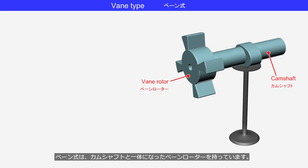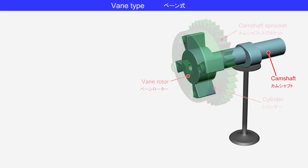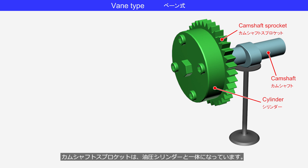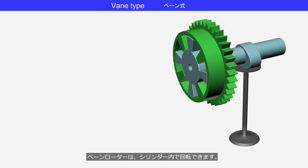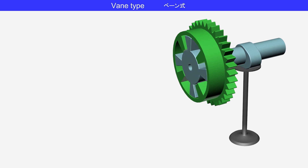The vane type has a vane rotor integrated with the camshaft. The camshaft sprocket is integrated with the hydraulic cylinder. The vane rotor can rotate within the cylinder. Currently, hydraulic pressure is applied to hydraulic chamber number one, pushing the vane rotor in a counterclockwise direction.